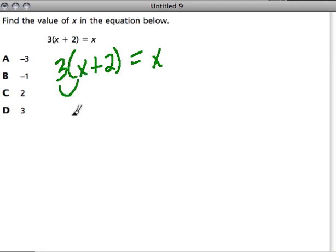So 3 times x is 3x. 3 times 2 is 6, and we're adding them up, so it's 3x plus 6. And that still gives me x.